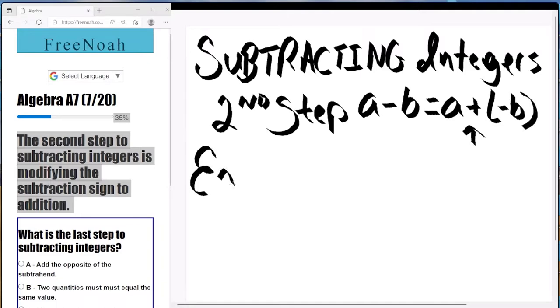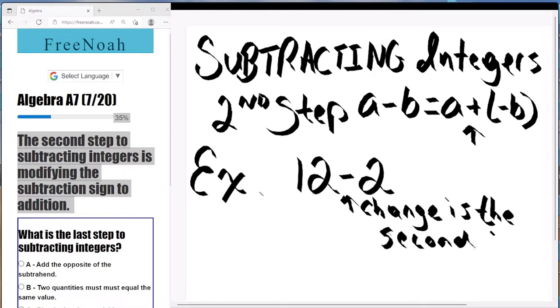Now, where do we get this positive from? Well, that's the second step here. For example, we have 12 minus 2 equals what? Well, it says here to change this subtraction sign to a positive. So change is the second step. So 12 minus 2 equals 12 plus.